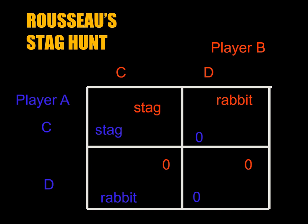In Rousseau's stag hunt, very briefly, you have a bunch of hunters trying to chase a deer, and if they cooperate, they catch the deer. But if the hunters suspect the other hunters are not cooperating, a hunter can always chase a rabbit and get a rabbit instead. By doing so, they leave a hole, and then the stag will run through the hole and escape — and no one gets the benefit of the stag. Because everyone fears abandonment, everyone chases a rabbit. But the problem is, if everyone chases a rabbit, it makes too much sound, all the rabbits escape, and no one has any food at all.